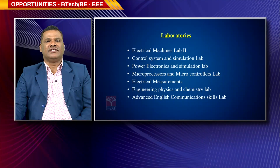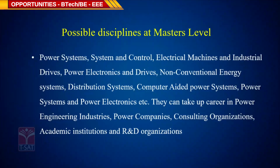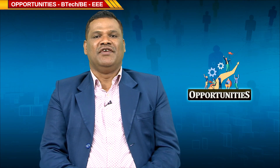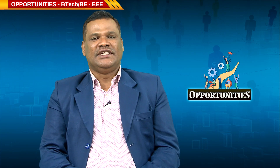This is machines lab 2 and the power electronics laboratory. Possible disciplines at the master's level for B.Tech completers include: power systems, control systems, non-conventional energy systems, distribution systems, power system analysis, computer-aided power systems, and power electronics. Consulting organizations include academic institutions, industry, and organizations. Students need to have strong knowledge of electrical components, electrical theorems, electrical generation systems, and basic electrical knowledge to easily find jobs in the public sector.